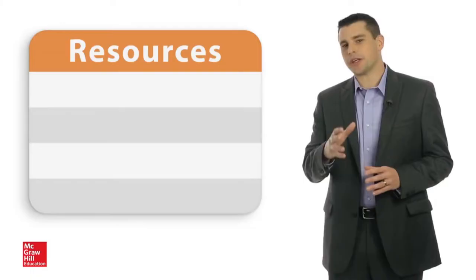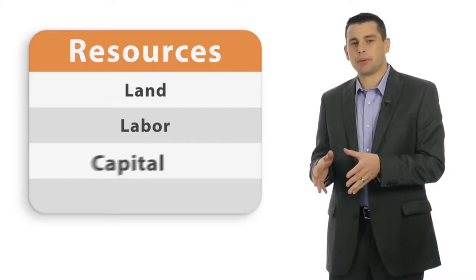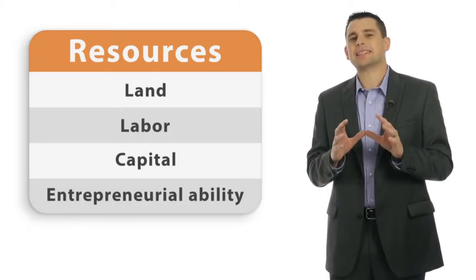In economics, there are four broad categories of resources used to produce goods and services: Land, labor, capital, and entrepreneurial ability. You'll also hear these resources referred to as inputs or factors of production.